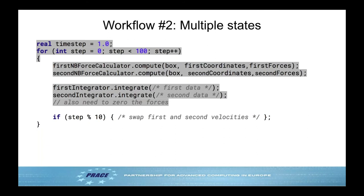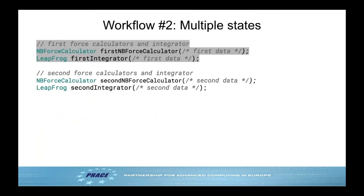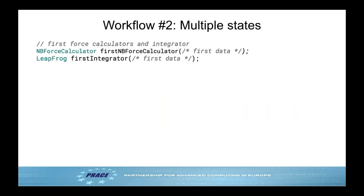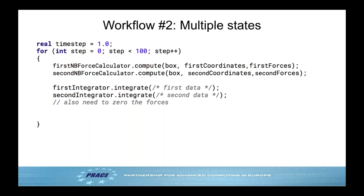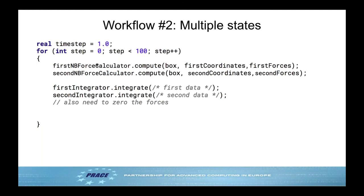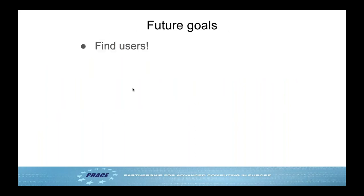Changing topology during simulation is similarly straightforward. Build first and second as different topologies, then instead of swapping velocities every tenth step, write a loop that runs 10 steps of system A, builds a whole new calculator, then runs 10 steps of system B.